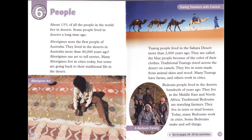Chapter 6: People. About 13% of all the people in the world live in deserts. Some people lived in deserts a long time ago. Aborigines were the first people of Australia — they lived in the deserts in Australia more than 40,000 years ago. Aborigines use art to tell stories. Many Aborigines live in cities today, but some are going back to their traditional life in the desert.